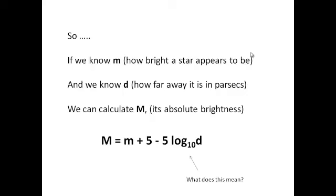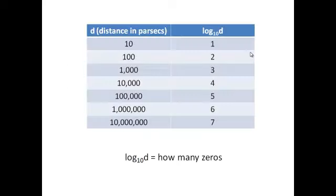Now, what on earth does that mean, log to the base 10 of d? It's actually quite simple. If you look at this table, here are some different distances in parsecs, and there's the value of log to the base 10 of that distance. And in any question that you get at GCSE, the distance will be a multiple of 10. It will be 10 or 100 or 1,000 or 10,000. And hopefully, looking at the table, if the distance is 1,000, then how many zeros do we have? 1, 2, 3. So log to the base 10 of d is 3. If it's 100,000, there are five zeros, so log to the base 10 of d is 5.